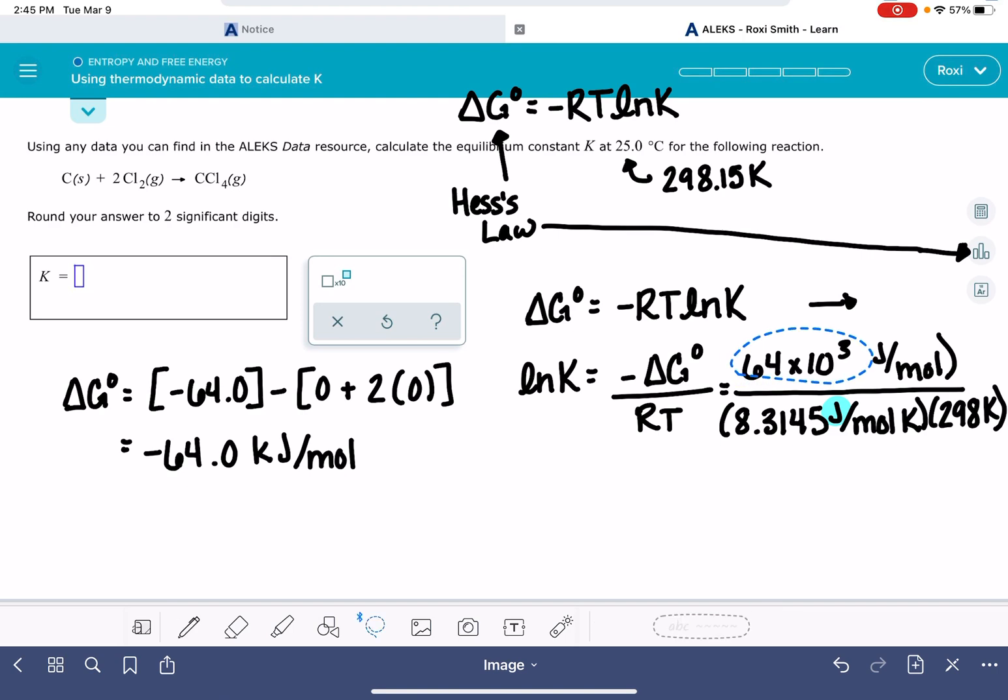So we are ready now to solve for the natural log of K. I'm just going to grab my calculator, 64 times 10 to the third, divided by 8.3145, and divided by 298, gives me a natural log of K of 25.83.